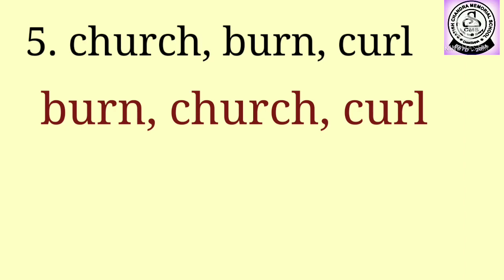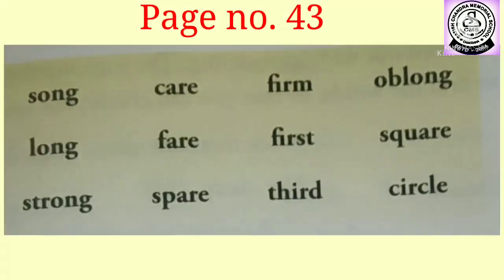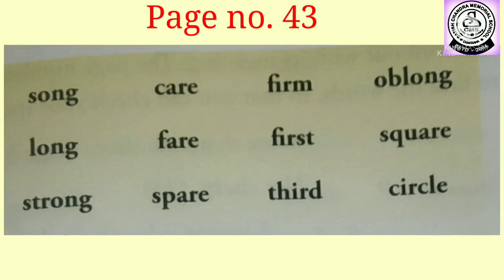Children, question number six, seven and eight is your homework — you will do it in your spelling copy. Now we will do page number 43. First we will read the spellings. S-O-N-G song. L-O-N-G long. S-T-R-O-N-G strong. C-A-R-E care. F-A-R-E fare. S-P-A-R-E spare.